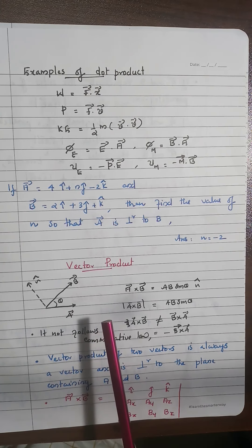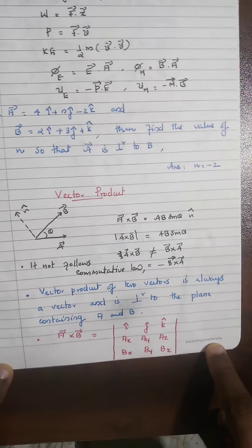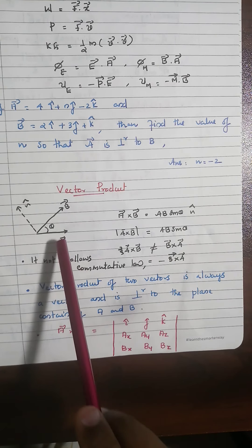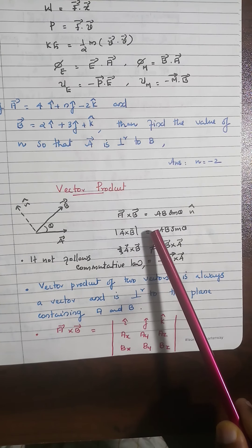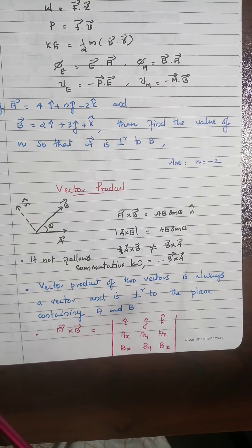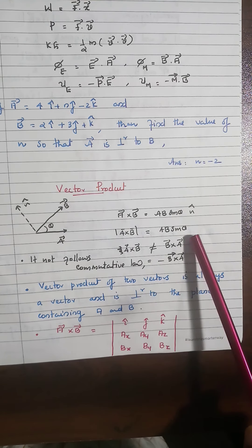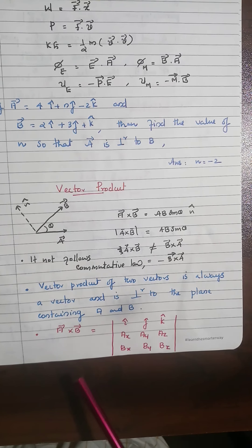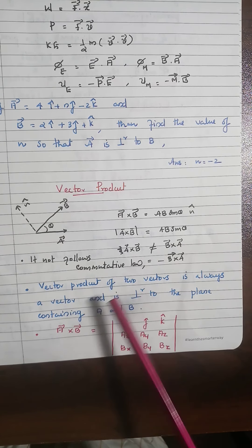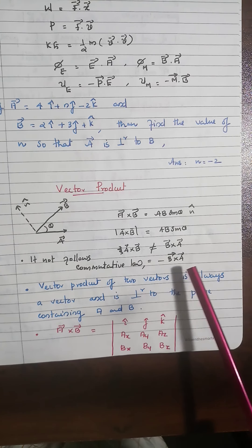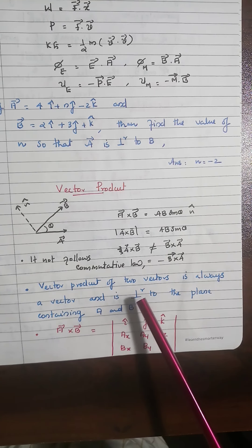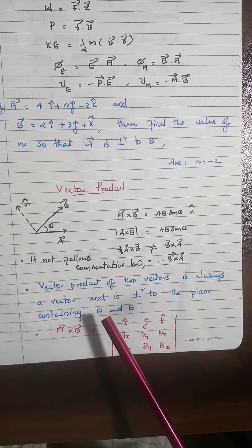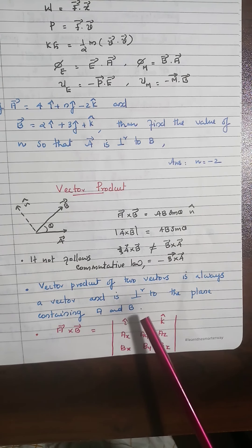The vector product (cross product): if A and B are two vectors with angle θ, then A × B = AB sinθ n̂, where n̂ is the unit vector perpendicular to the plane containing A and B. The magnitude is AB sinθ. It does not follow the commutative law: A × B = −(B × A). The vector product is always a vector perpendicular to the plane containing A and B.